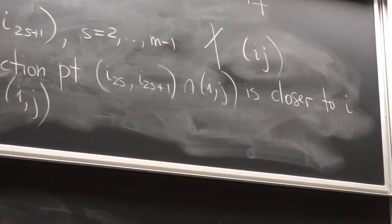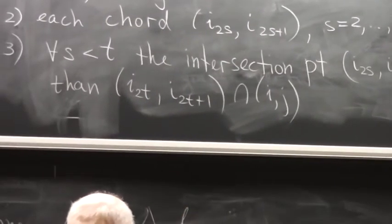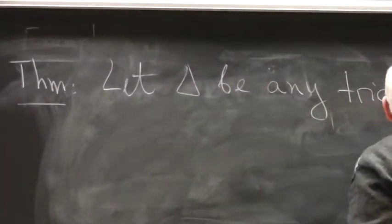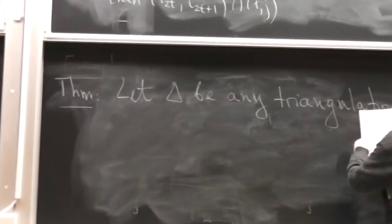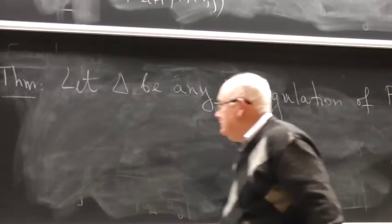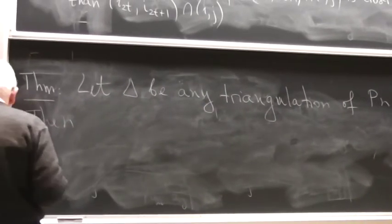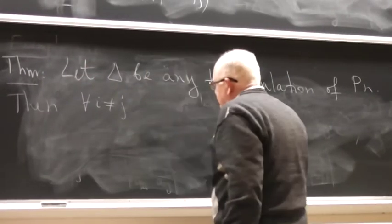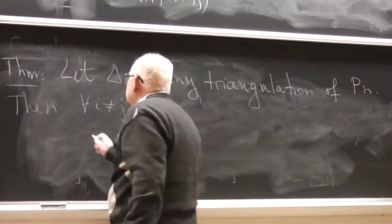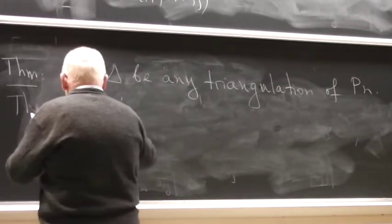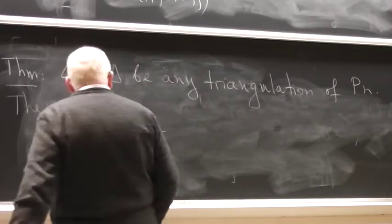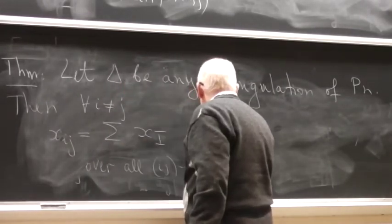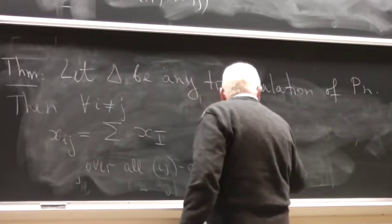And then I will form a weight. So let's take a room. And the theorem says, let delta be any triangulation. Then for any q, i t, just to distinct the chord, xij, which are the sum over all ij admissible sequences.